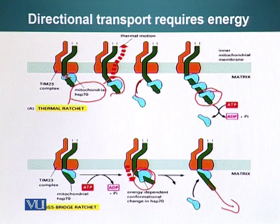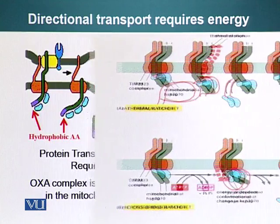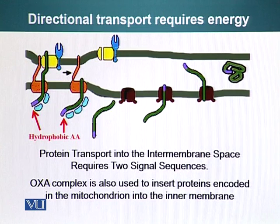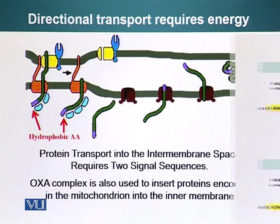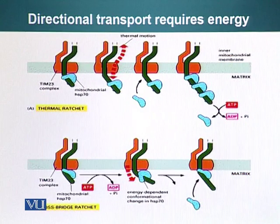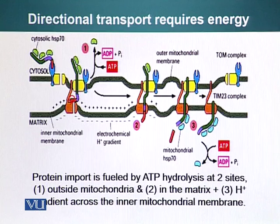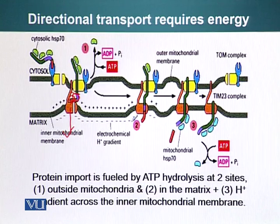We have seen two models for how proteins enter the mitochondrial matrix. But what about proteins that have to go into the intermembrane space? These proteins actually have two signal sequences. Looking at the previous diagram, the red domain is the signal sequence for import into the mitochondria, while the purple portion is the signal sequence directing the protein to the inner membrane space.